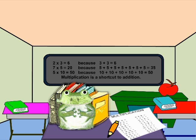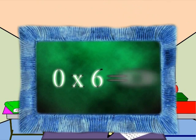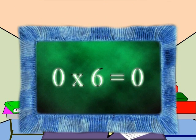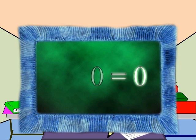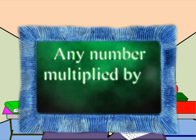Anything times zero is zero. For example, zero times six equals zero, and eight times zero equals zero. They all equal zero.